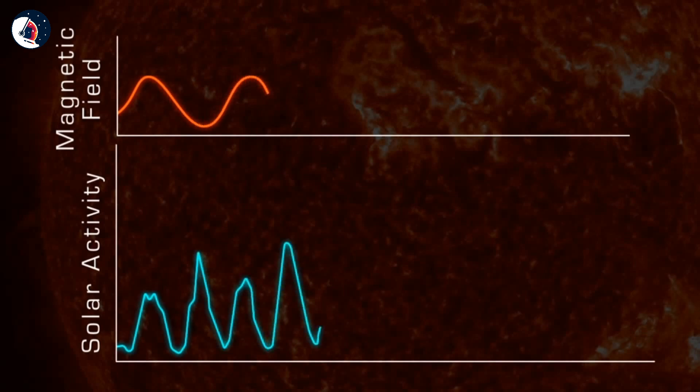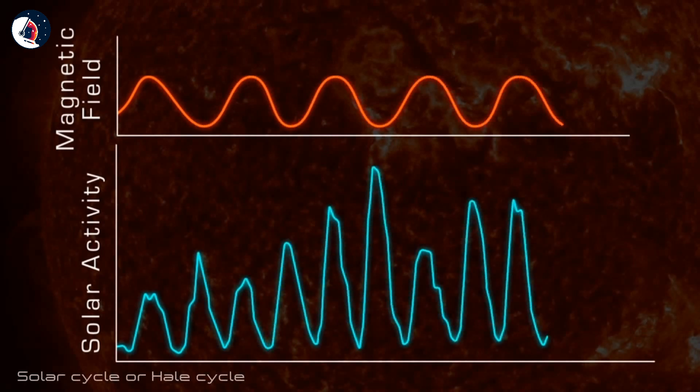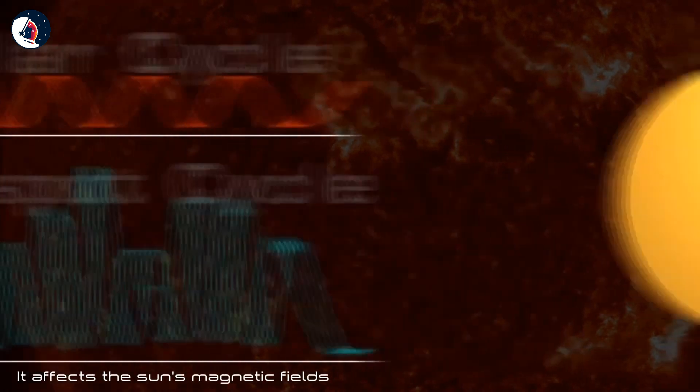The sun's 11-year cycle is a symptom of a longer 22-year cycle called the solar cycle, or Hale cycle, which affects the sun's magnetic fields.